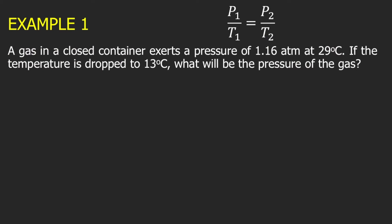Let's proceed to Example 1. A gas in a closed container exerts a pressure of 1.16 atmosphere at 29 degrees Celsius. If the temperature is dropped to 13 degrees Celsius, what will be the pressure of the gas? This problem talks about the relationship of pressure and temperature, so we will be using Guy-Lussac's Law with the formula P1 over T1 equal to P2 over T2. From the problem, we can identify: 1.16 atm is P1, 29°C is T1, and 13°C is T2.